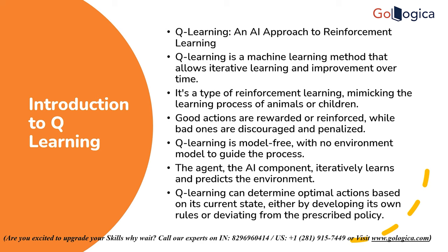An artificial intelligence model is trained to emulate how animals or young children use reinforcement learning. Rewarding or reinforcing desired behavior is the goal, while distancing and penalizing undesired behavior is not. The training program uses a state-action-reward-state-action form of reinforcement learning. Q-Learning offers a model-free method for reinforcement learning, meaning the process is not guided by any environment model.